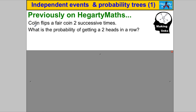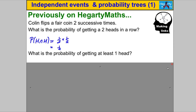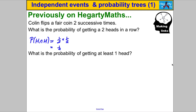The flipping of the coins twice are independent events — the first flip does not affect the second flip. So the probability of getting two heads, a head and a head, we can just say that's the probability of a head on the first coin multiplied by the probability of a head on the second coin, which would be equal to a quarter. Simple as that.